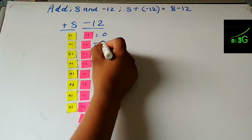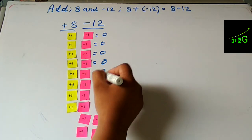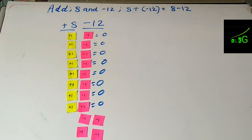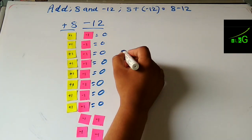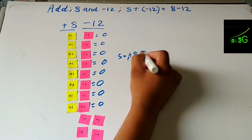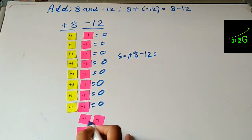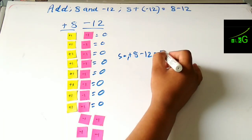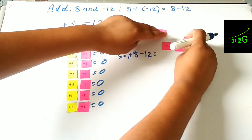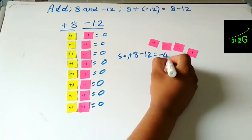Now, plus one and minus one together equal zero, so each such pair has a value of zero. The remaining numbers are minus one, minus one, minus one, minus one. So eight minus twelve equals minus four, and that is the answer.